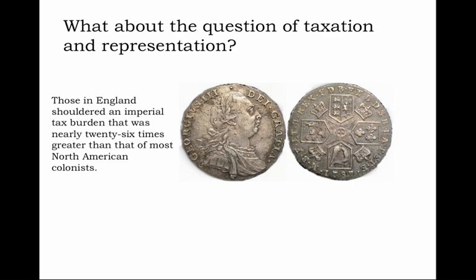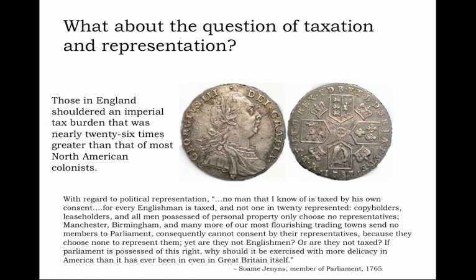This is a point that many British officials quickly picked up. Some Jennings, a member of Parliament in the year of the Stamp Act, said with regard to political representation: 'No man that I know of is taxed by his own consent. For every Englishman is taxed, and not one in twenty represented. Copyholders, leaseholders, and all men possessed of personal property only choose no representatives. Manchester, Birmingham, and many more of our most flourishing trading towns send no members to Parliament. Consequently, cannot consent by their representatives because they choose none to represent them. Yet are they not Englishmen? Or are they not taxed? If Parliament is possessed of this right, why should it be exercised with more delicacy in America than it has ever been, even in Great Britain itself?'